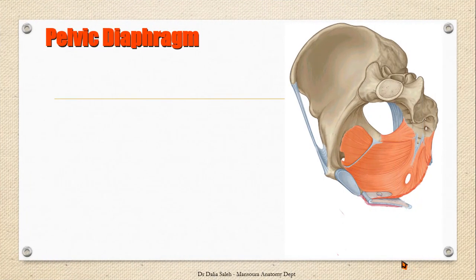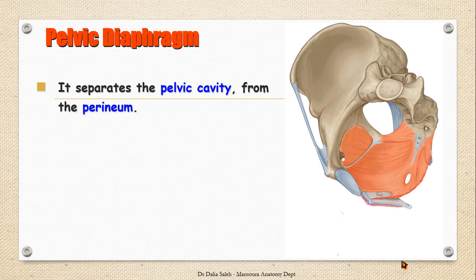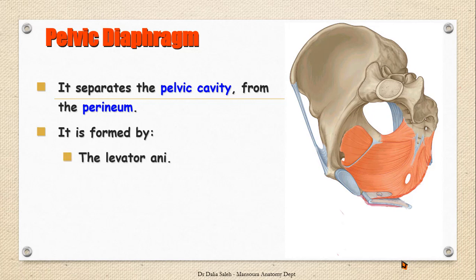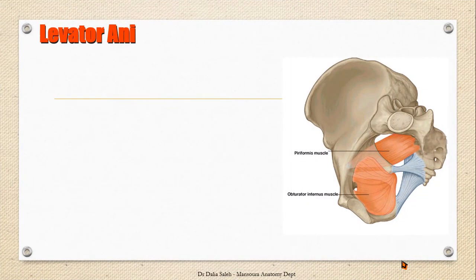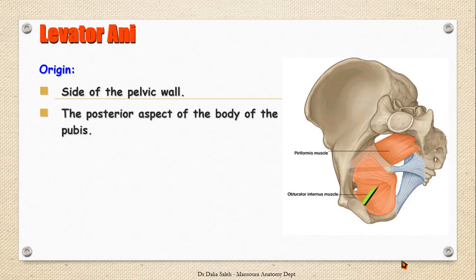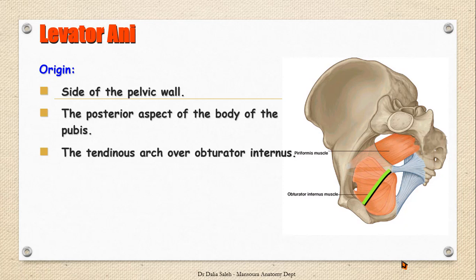The floor of the pelvis, or the pelvic diaphragm, separates the true pelvic cavity from the perineum. It is formed of the levator ani and the coccygeus muscles, one on each side. The levator ani muscle has a skeletofascial origin: it takes origin from the side of the pelvic wall, from the posterior aspect of the body of the pubic bone, and then from the tendinous arch of the fascia over the obturator internus muscle back to the ischial spine. The two muscles course medially and anteriorly to join at the midline.